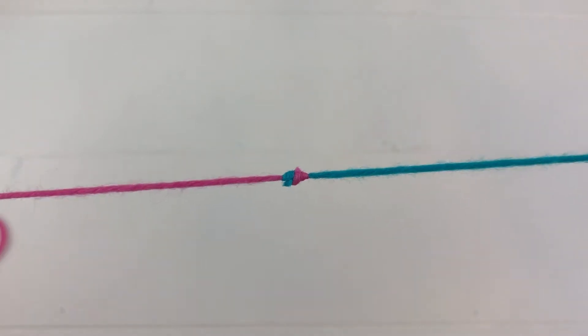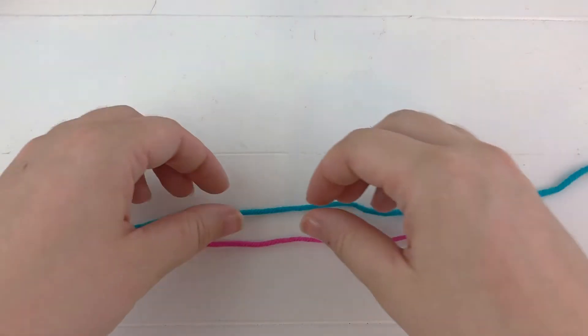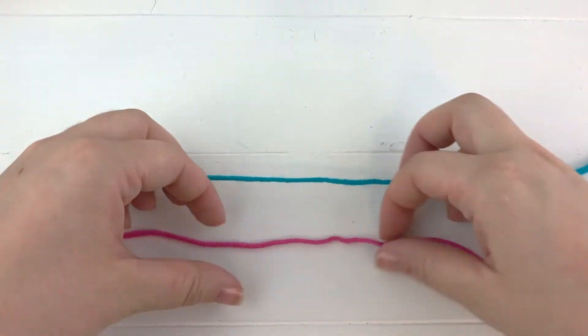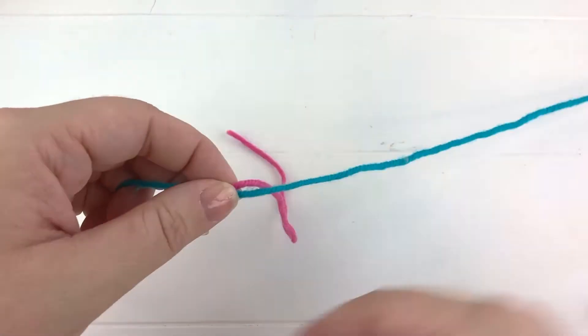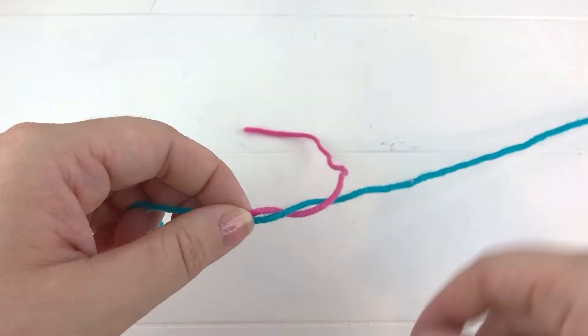But don't worry, I'll show you how to do it. To start, lay out your yarn next to each other. Take one strand of yarn and wrap it around the other four times.